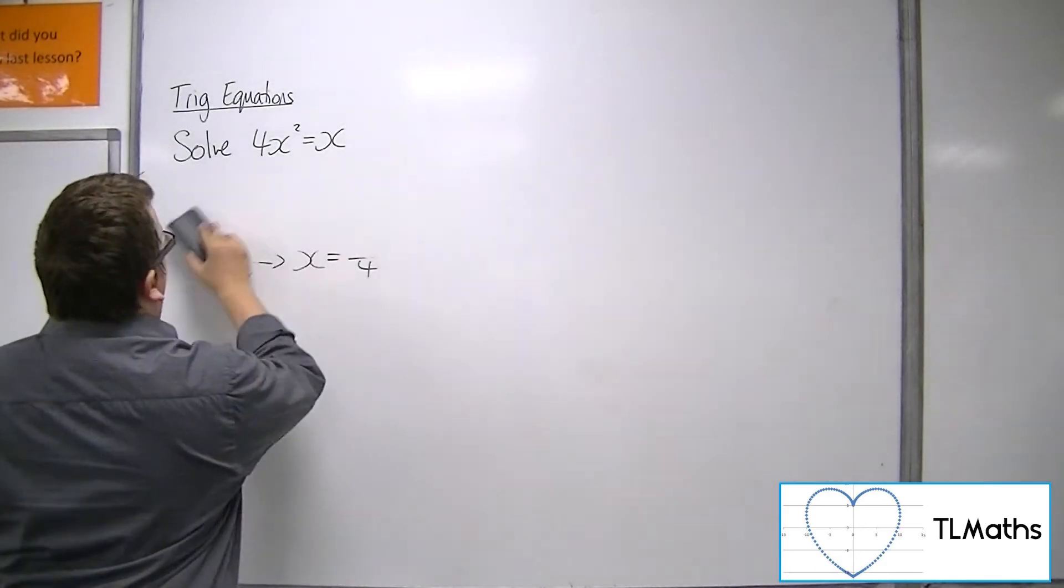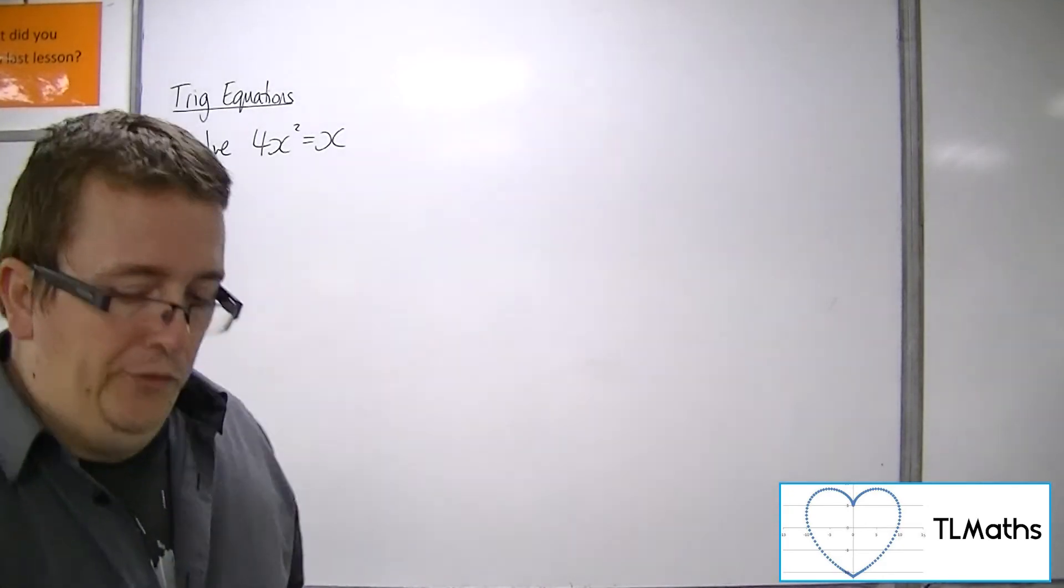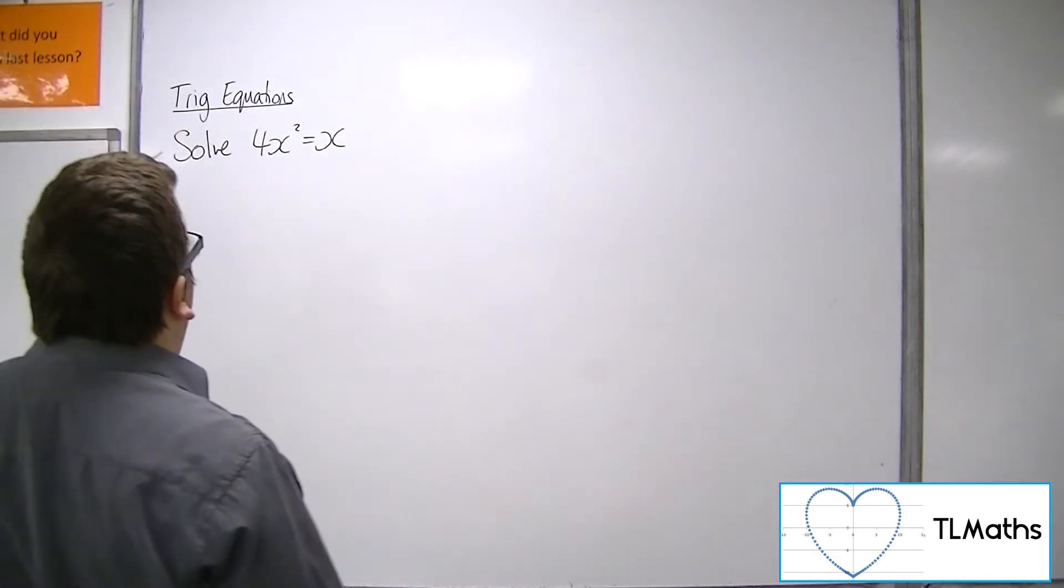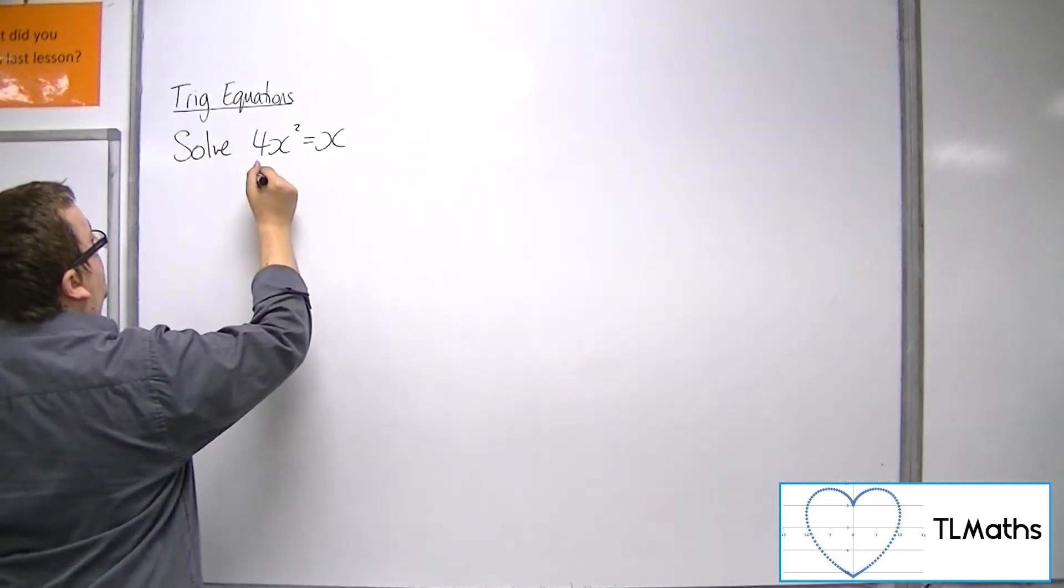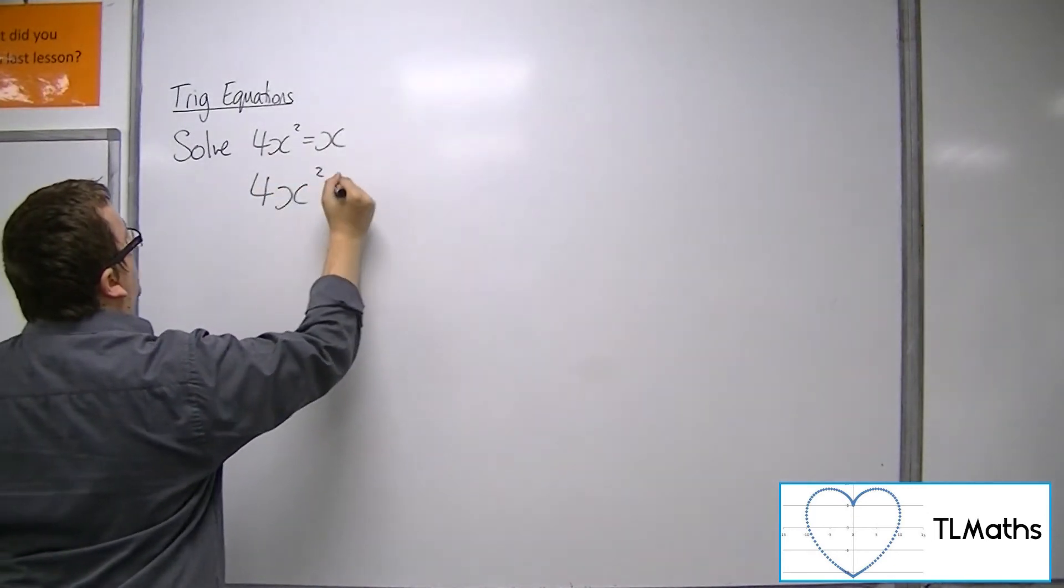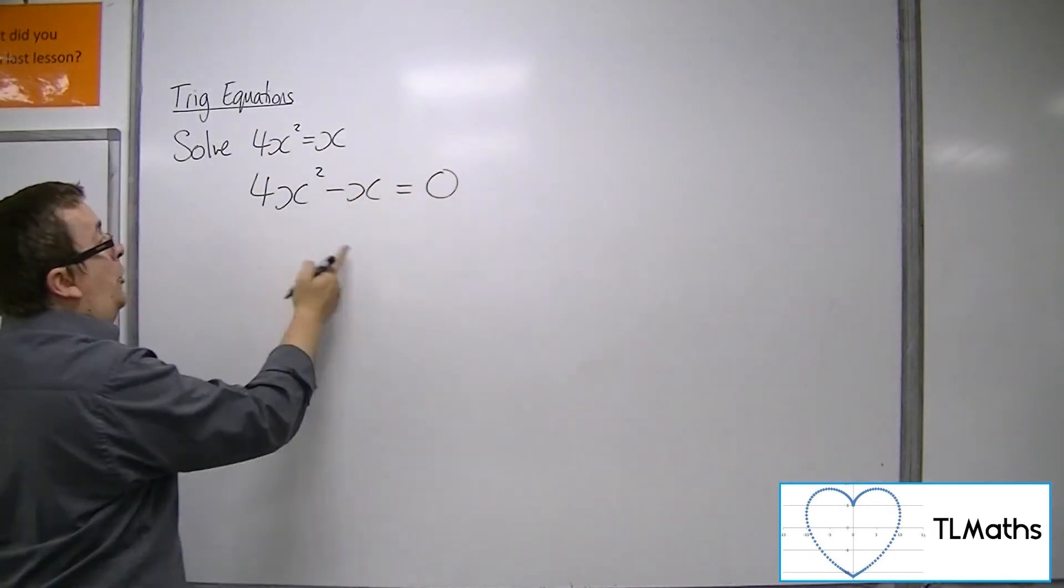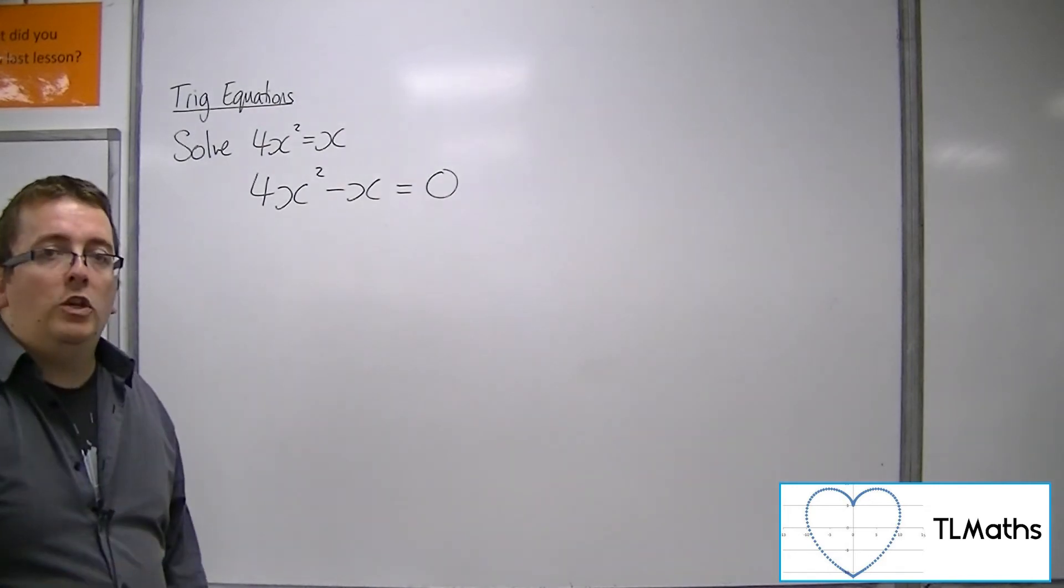What we must do first is we must subtract x from both sides so that we've got something equals 0. We need to solve this quadratic equation.